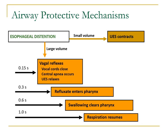If a small volume of refluxate reaches the esophagus, causing esophageal distension, the upper esophageal sphincter will contract and secondary peristalsis will move those contents downward into the stomach. If the reflux material is large, esophageal distension will activate vagal reflexes, leading to vocal cord closure to prevent reaching the bronchi, and central apnea to prevent inhaling the content into the trachea and bronchi.